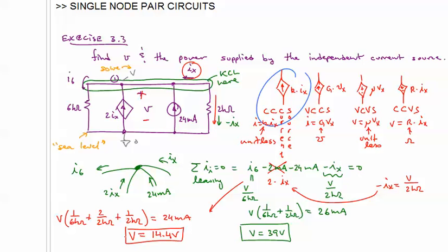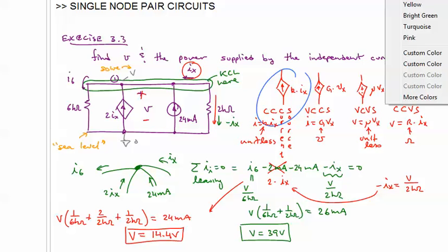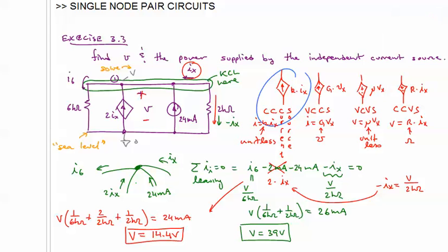V equals 14.4 volts. Now, you can always check your work, and the way we would check that here is we would look at KCL. Let me go to a different color. We check KCL at this point here. So I6 is V over 6K, so it would be 14.4 over 6.